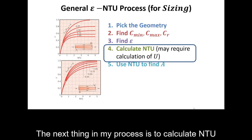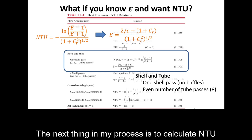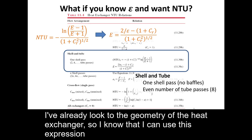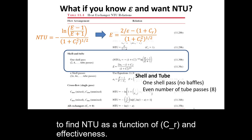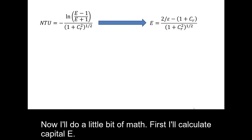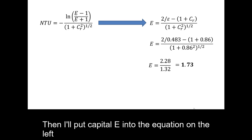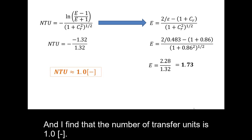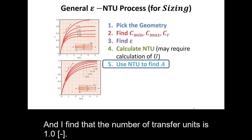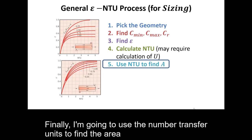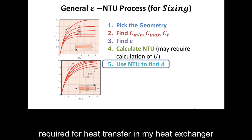The next step is to calculate NTU. Using the geometry I already identified, I apply the correlation for NTU as a function of C_r and effectiveness. I first calculate capital E and find it is 1.73. Substituting into the NTU equation, I find the number of transfer units is 1. Finally, I'll use NTU to find the area required for heat transfer in the heat exchanger, using the definition NTU = U·A / C_min.